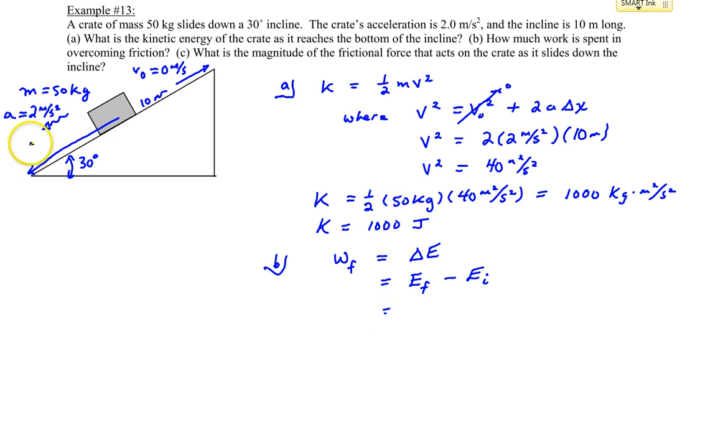At the bottom of the ramp, we can assume that the potential energy is zero, because it's reached the very bottom, and that it's all kinetic energy. So the final energy is really just the kinetic energy we determined earlier, which was 1,000 joules.